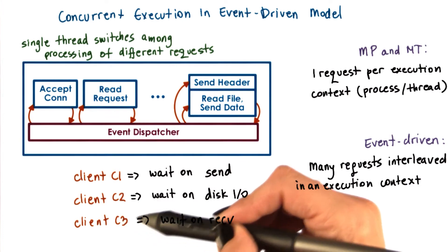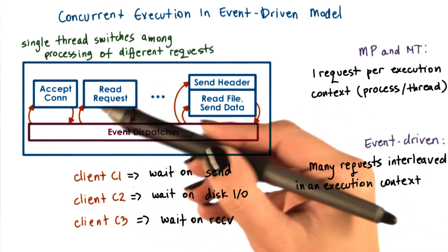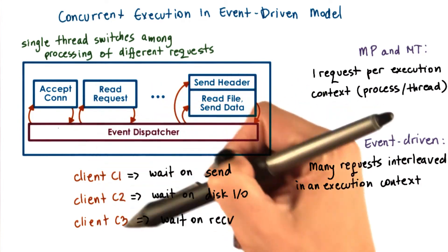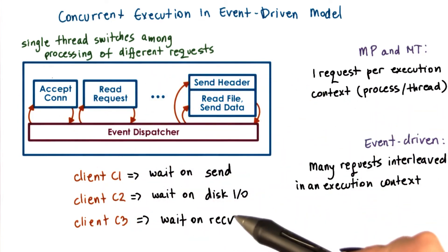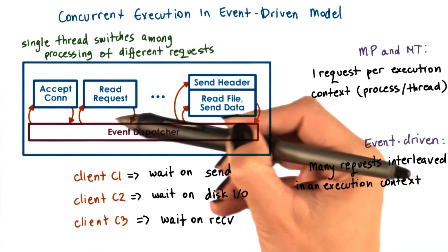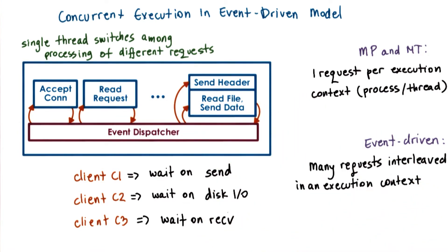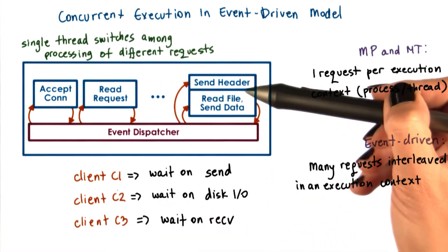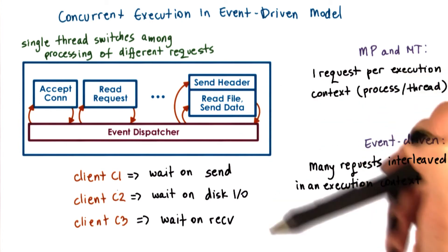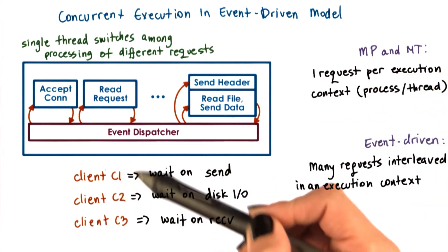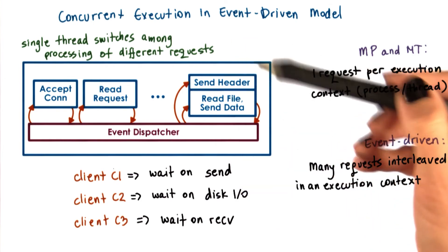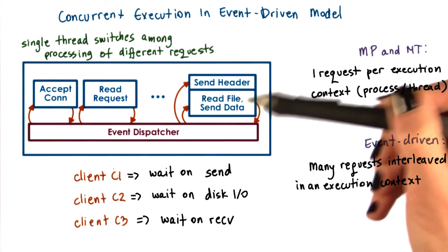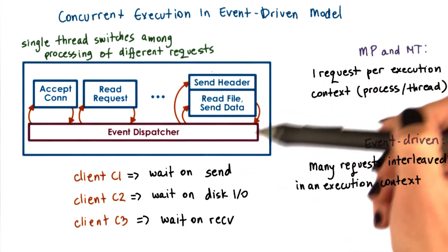Some amount of time later, the processing of all three requests has moved a little bit further along. The request for C3 had its accept connection completed, and now that request is waiting on an event with the HTTP message. The request for client C2 is perhaps waiting on the disk I/O in order to read the file that needs to be sent out. And the request for client C1 has already started sending the file in chunks — some blocks of some number of bytes at a time — and it's waiting in one of those iterations.